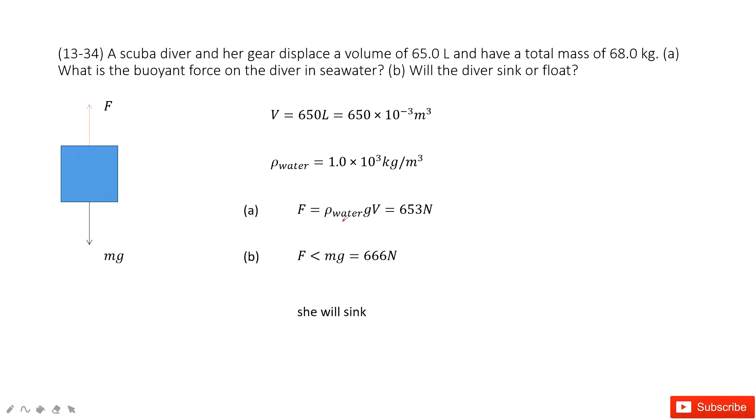So we need to find the mass of this water. So density of the water times v. v is the volume replaced by this object. So rho g v. And you can see all the quantities are given. Density of water, volume is given.